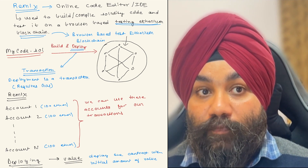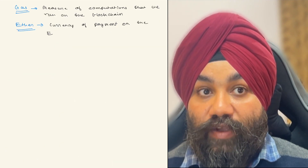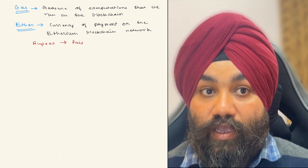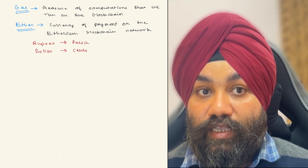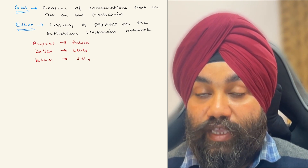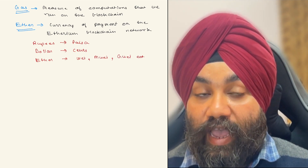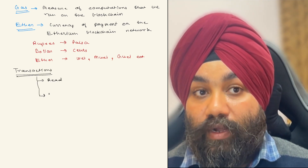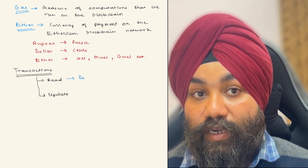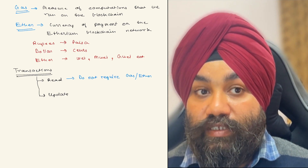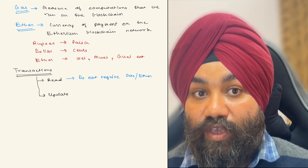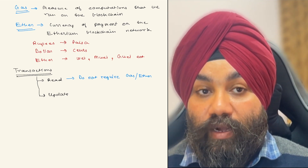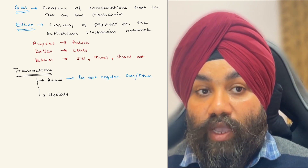Gas is the measure of the computation run on the blockchain — it measures how much processing you are doing. Ether is the currency of payment on the Ethereum blockchain, so you pay for the gas you use in terms of ether. Just as rupees has paisa and dollars has cents as subunits, ether has wei, mwei, gwei, etc. as its subunits. We can spend the ether in our test accounts to execute transactions.